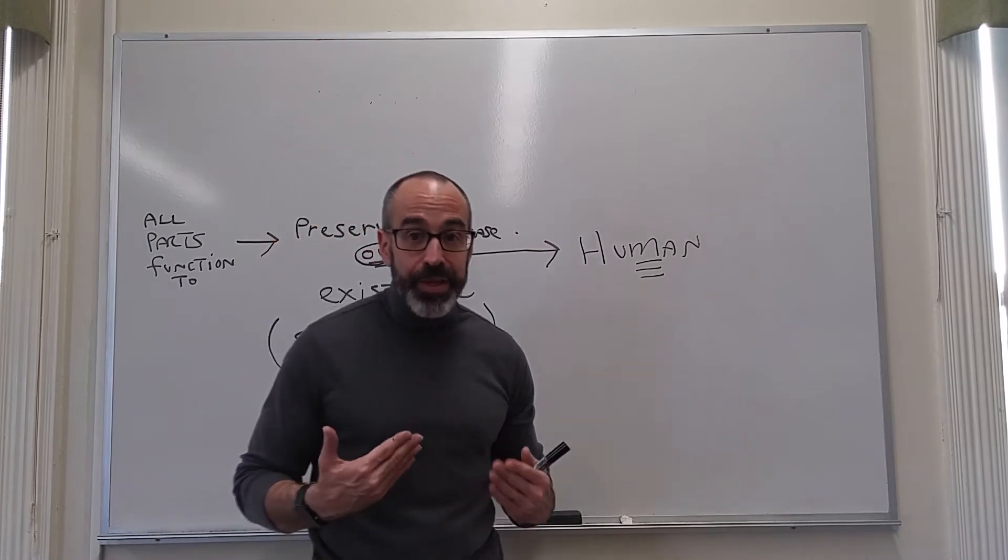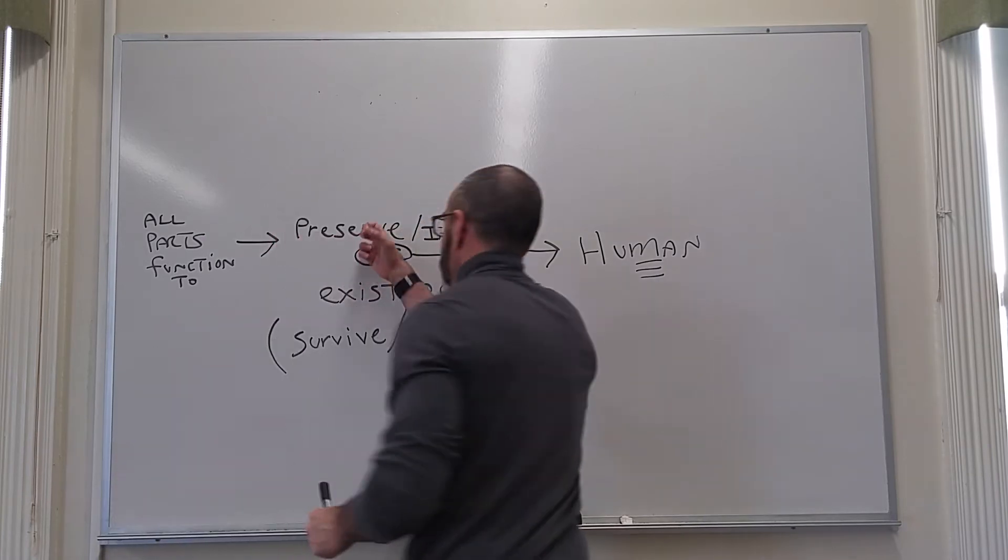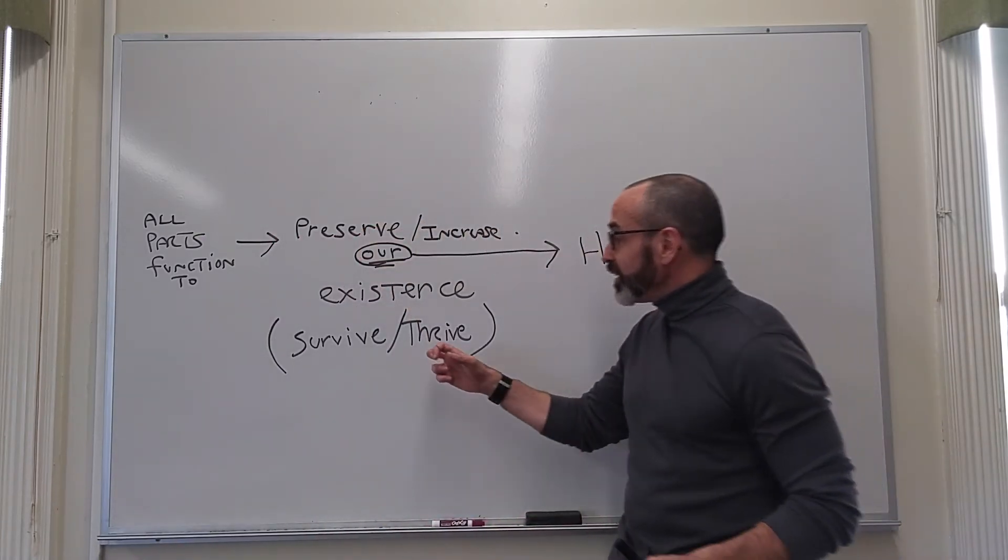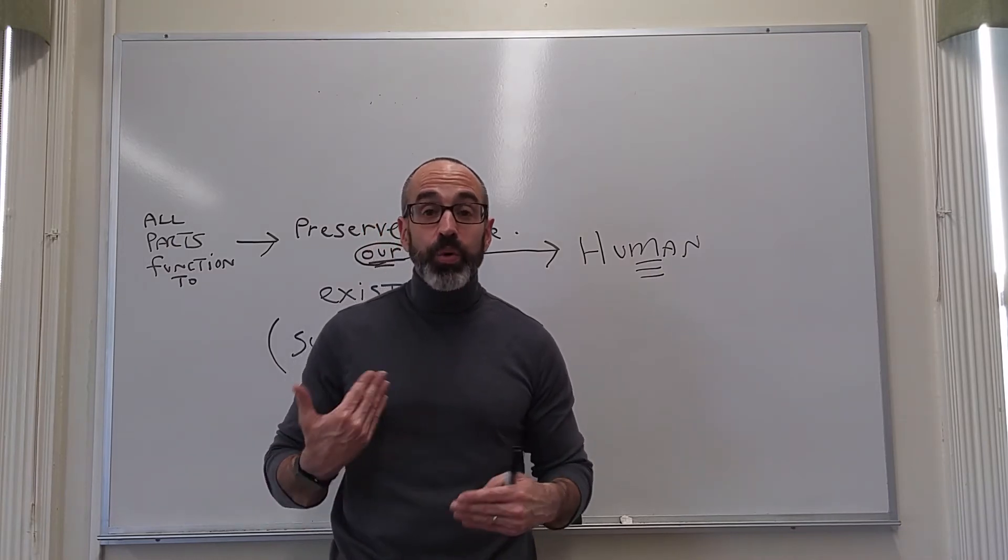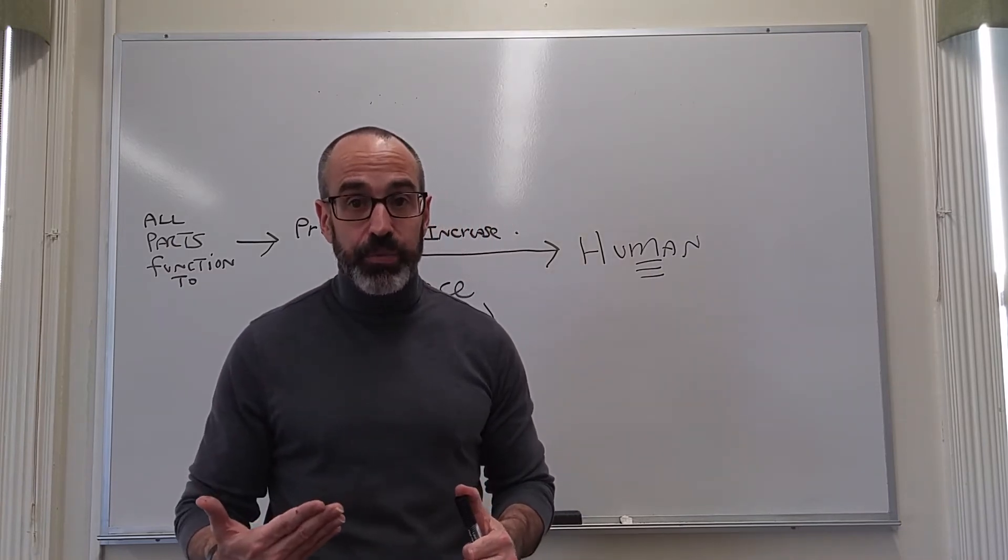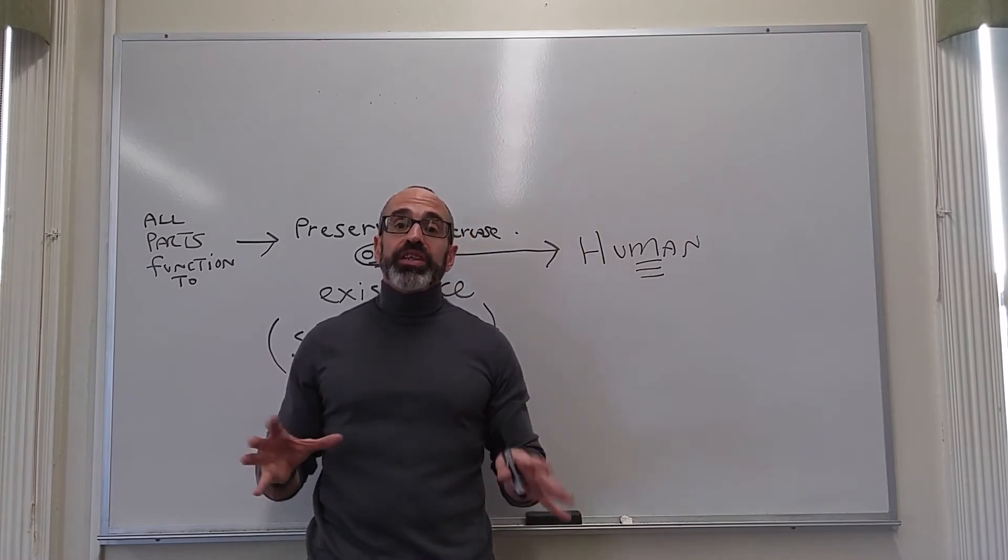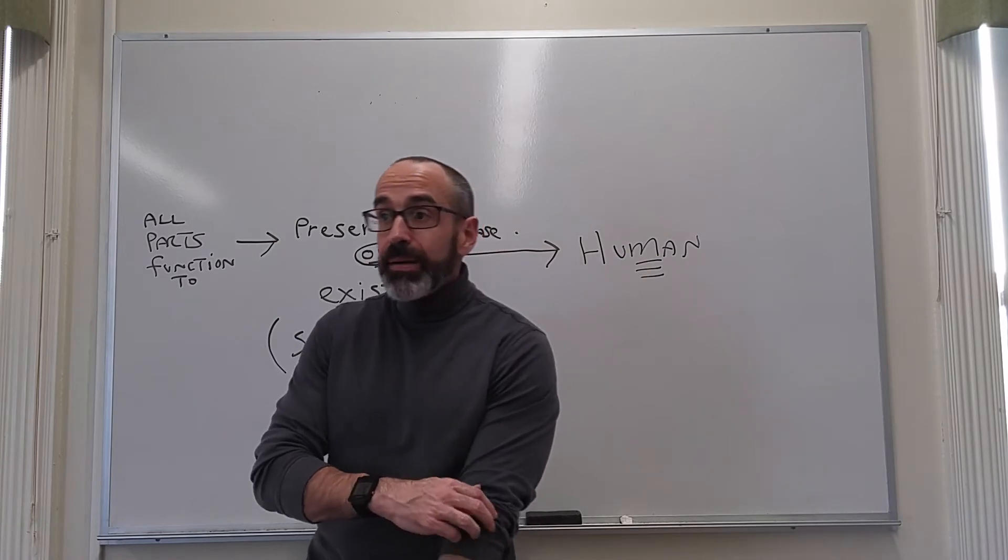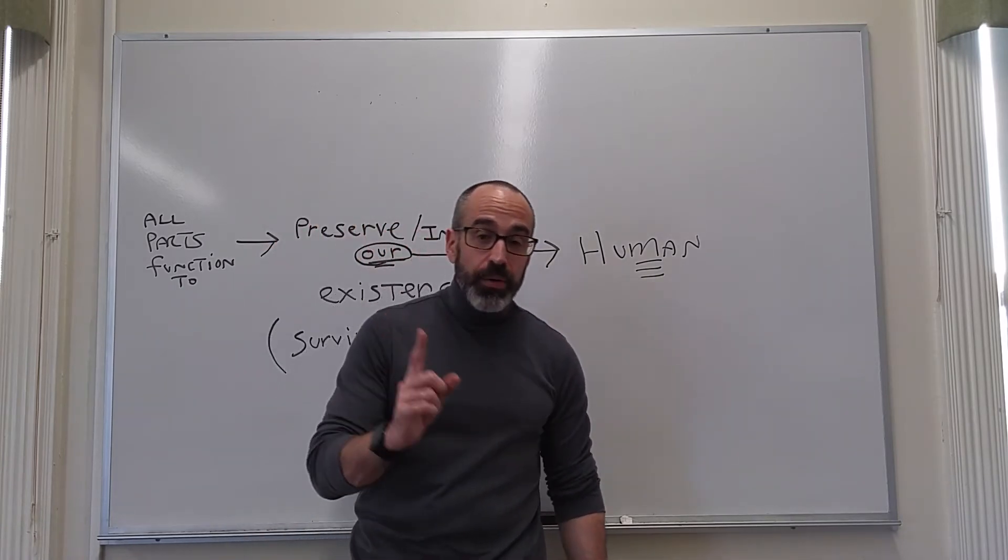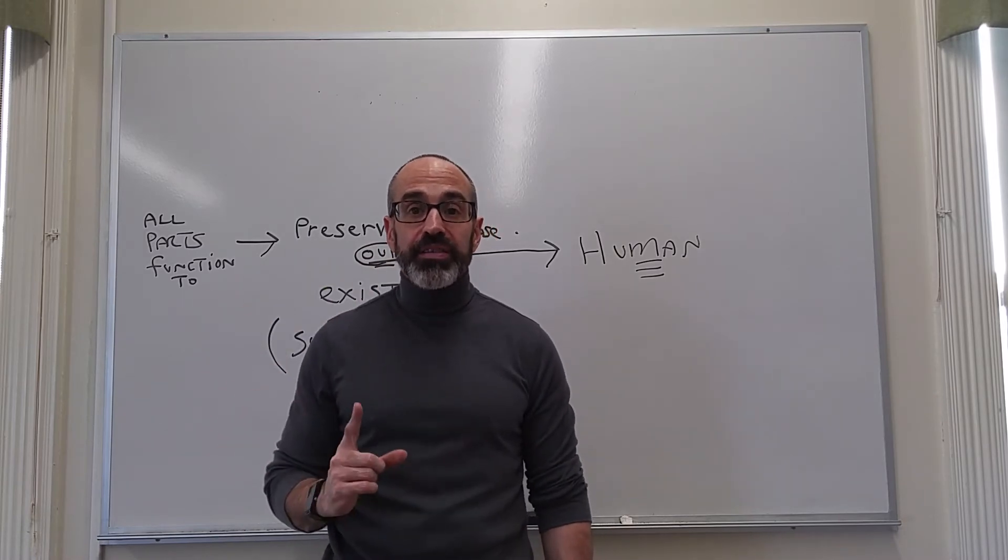And we will have, therefore, written into us the goal, what it is that we are to preserve, what it is that we are to cause to flourish or thrive, and therefore what it is to be an excellent human. And so Aristotle next considers the question, what is it to be human? And if you're going to consider this question, the best way to do it is to figure out those characteristics that all and only humans have.